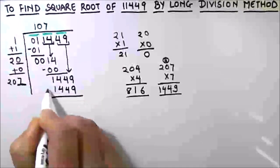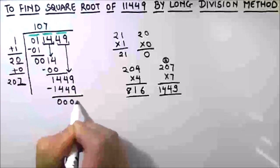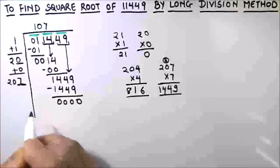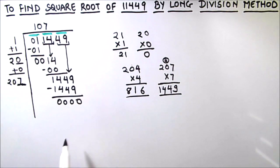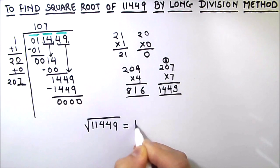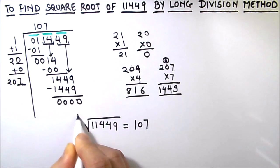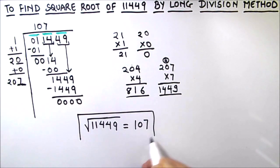We are going to subtract the two numbers and we got remainder as zero. Now here we have divided all the digits, no more groups to drop down. So we got the answer as the square root of 11449 as 107. So this is our final answer.